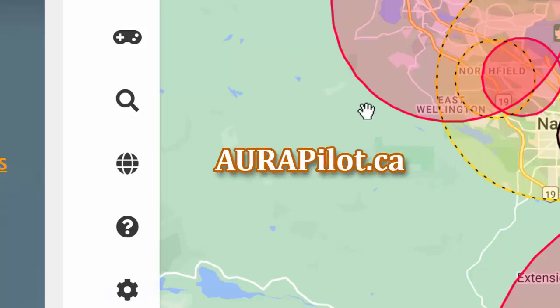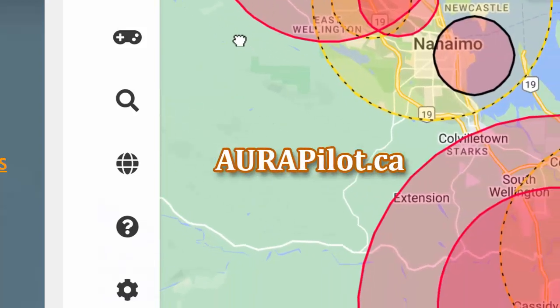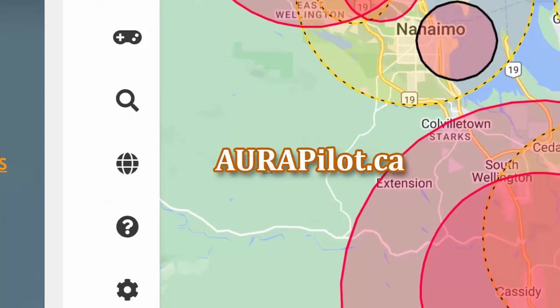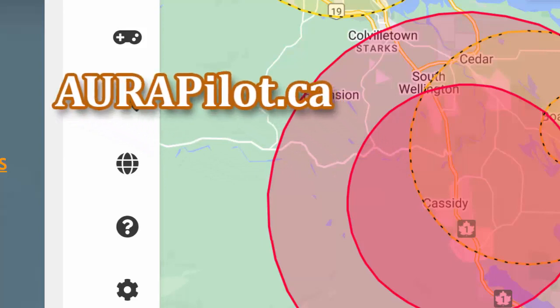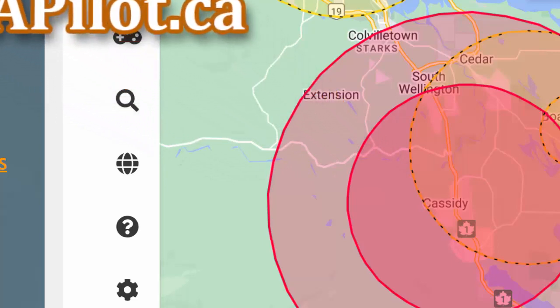So that's the interactive map. I suggest you check it out. You can get to it from the aurapilot.ca website. That concludes the lecture on the TC Canada interactive nav map.